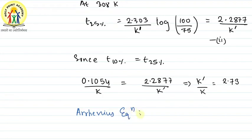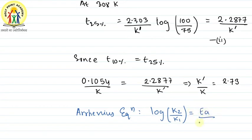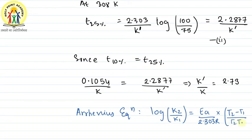Now we apply the Arrhenius equation. The Arrhenius equation says: whenever you are finding the ratio at two different temperatures, taking log of k2/k1 equals Ea divided by 2.303R, multiplied by (T2 − T1) divided by (T2 × T1).